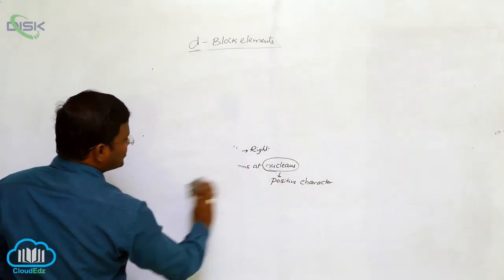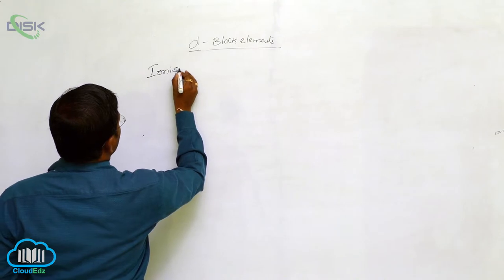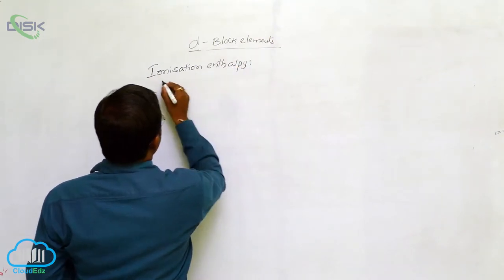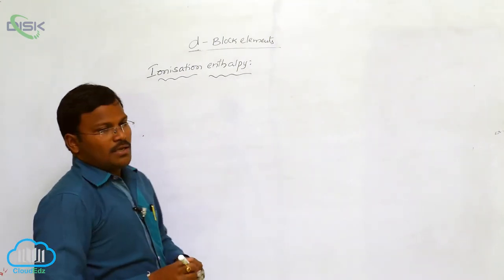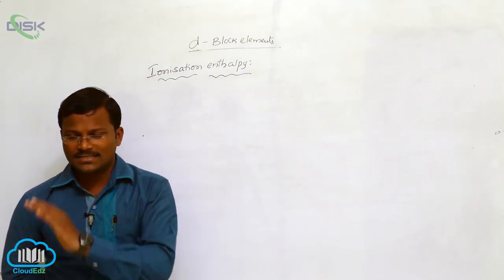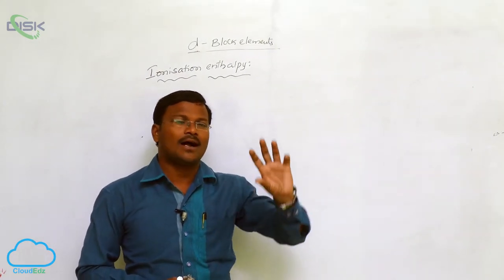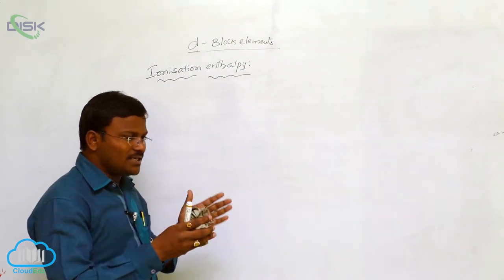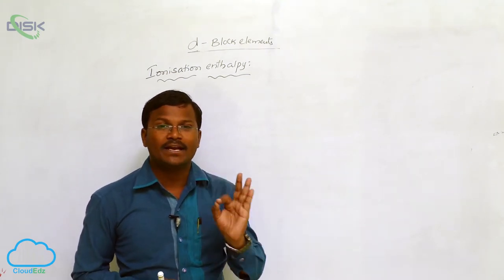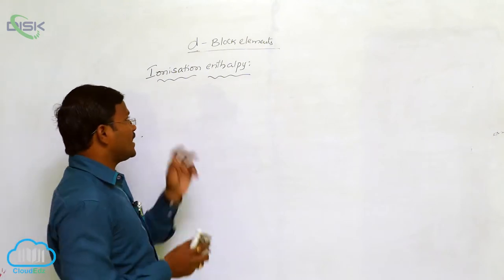The next topic is ionization enthalpy. While moving from scandium to zinc in the 3d, 4d, 5d, and 6d series — from left to right — atomic size decreases due to increased net nuclear attraction onto the valency orbit. When atomic size decreases, the energy required to eliminate electrons from the valency orbit increases, so ionization enthalpy increases from left to right.